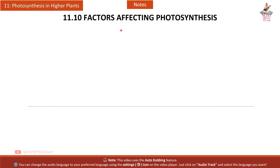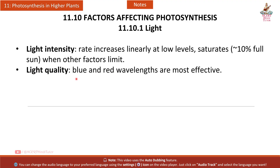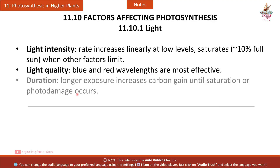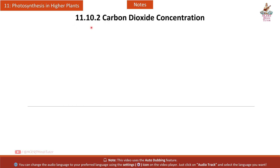Section 11.10 Factors affecting photosynthesis — 11.10.1 Light: light intensity increases the rate linearly at low levels and saturates at approximately 10% of full sunlight when other factors become limiting. Light quality: blue and red wavelengths are most effective. Duration: longer exposure increases carbon gain until saturation or photo-damage occurs. Blue and red light most efficiently drive photosynthesis.